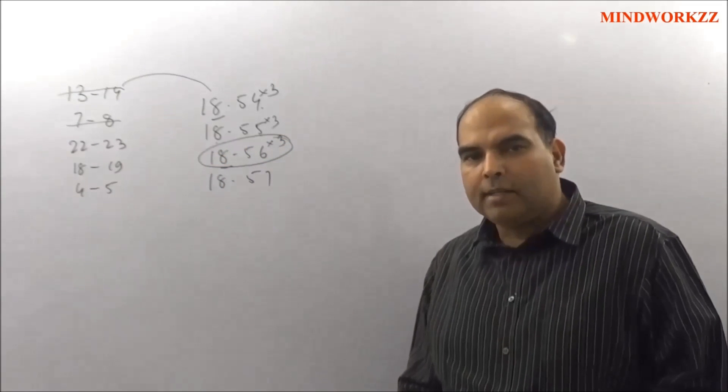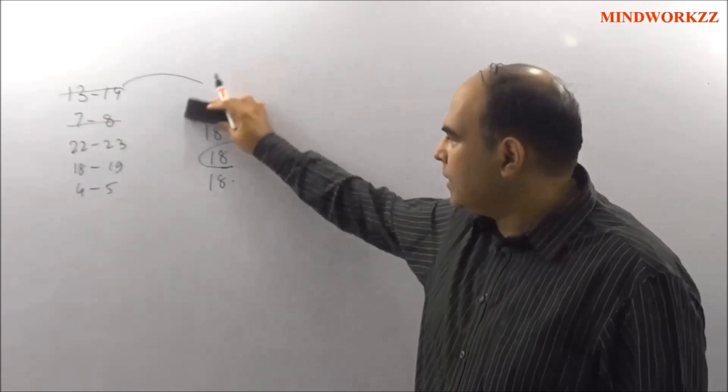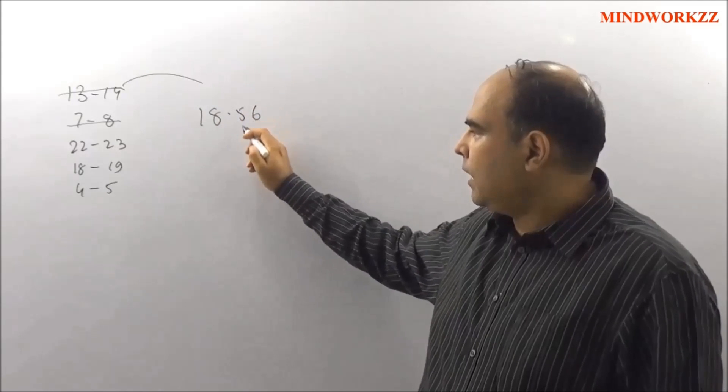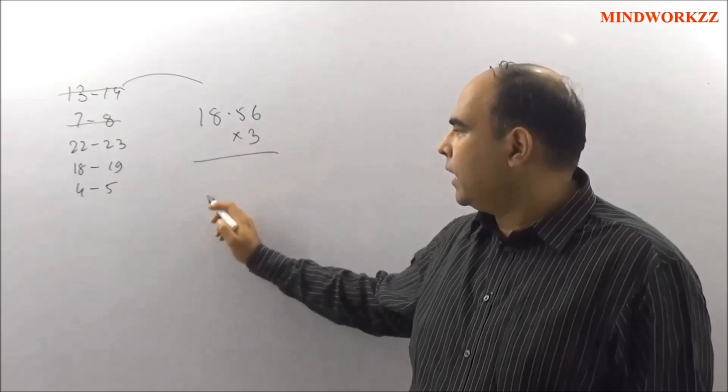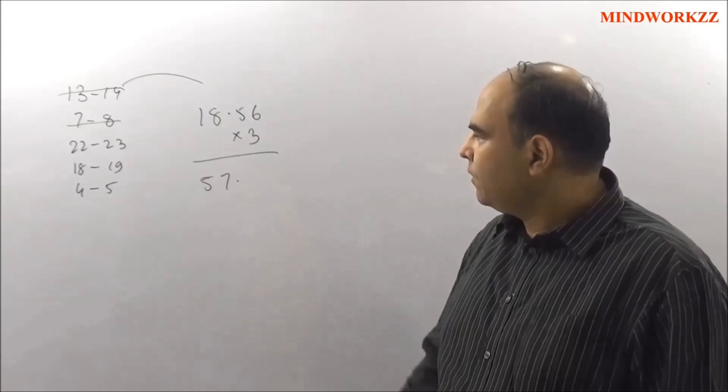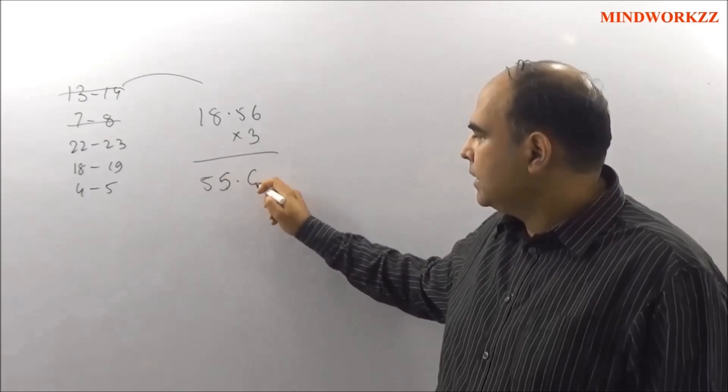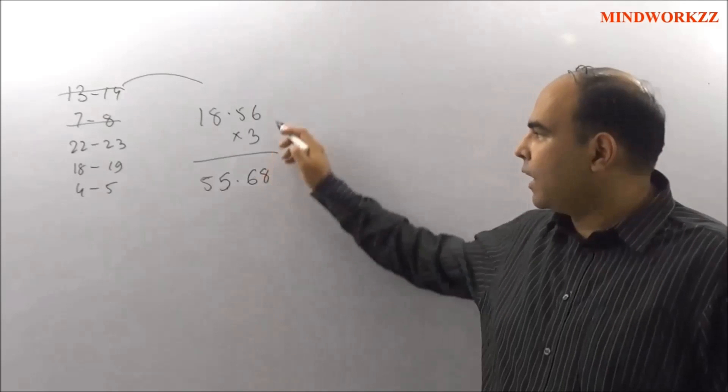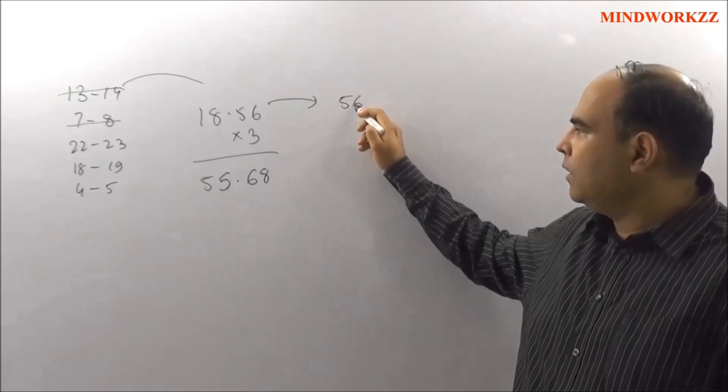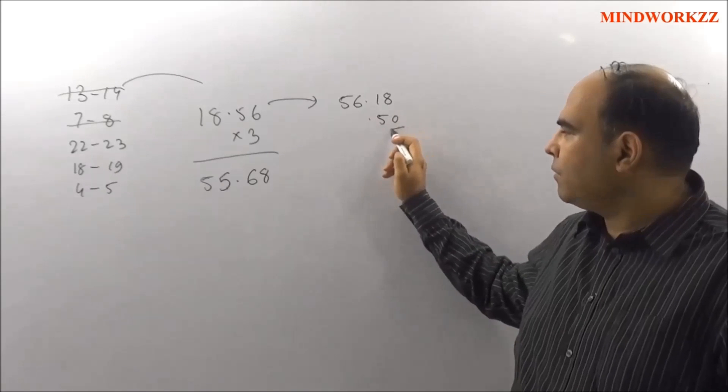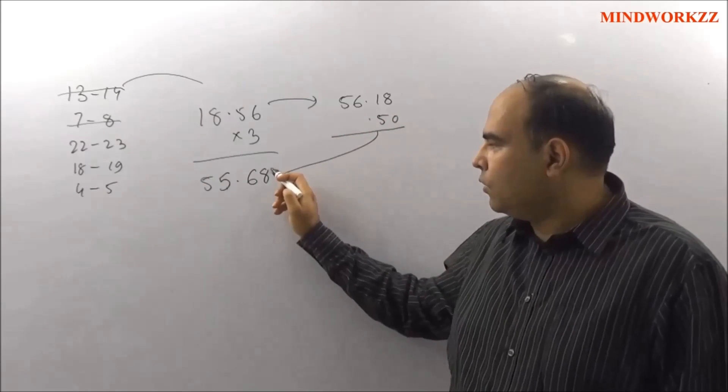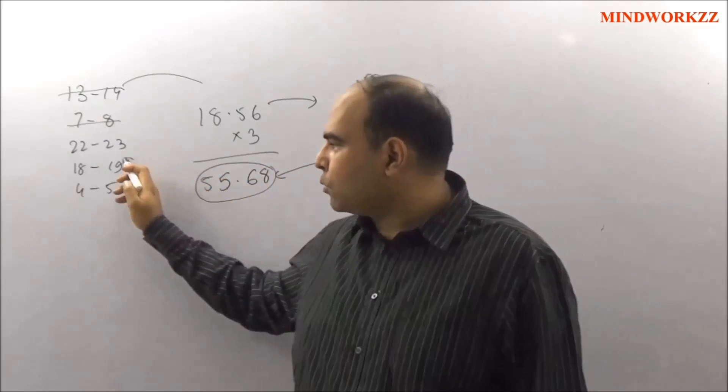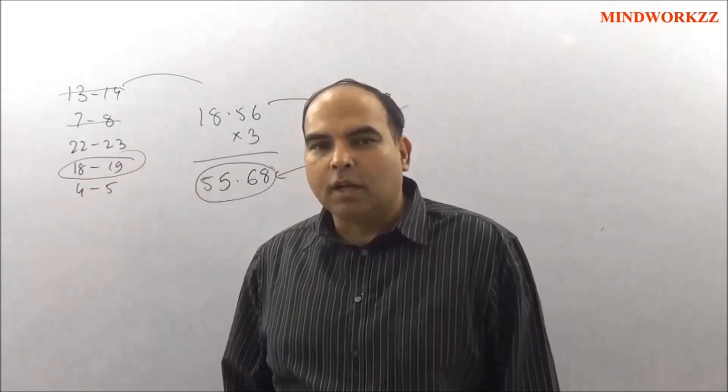So I realize that if I look at 18.56, I triple it, I get 55.68. And the other route, if I transpose the rupees and paise, I get 56.18, and I subtract 50 paise from that and I get the same value. And if the correct answer is 18.56, I guess the correct option is that the value of the check must be 18 to 19.